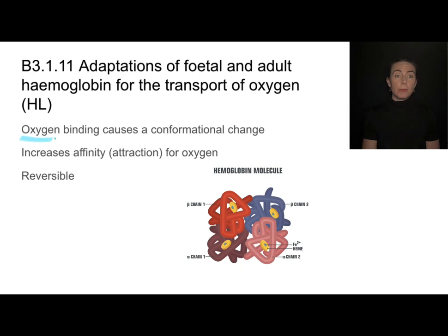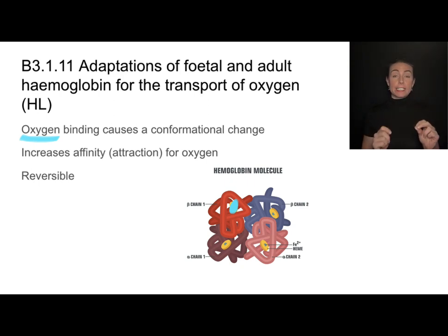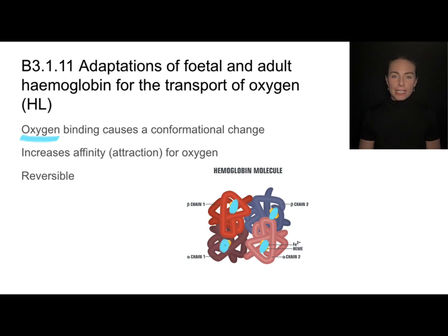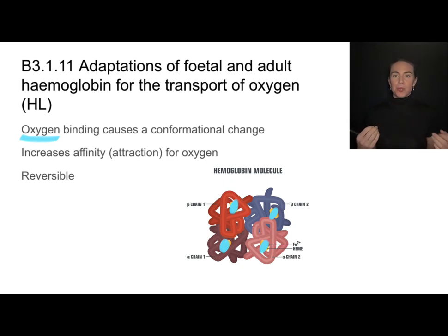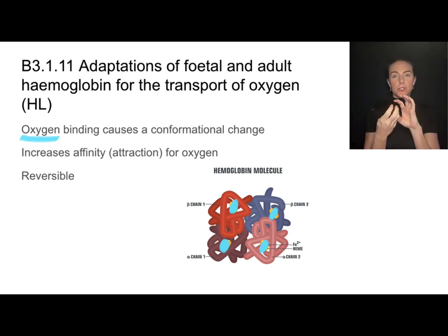When an oxygen molecule binds to one of these heme groups, it causes a conformational change — a change in the shape of the hemoglobin molecule. That increases its affinity, or attraction, to oxygen. So every time an oxygen binds, hemoglobin becomes more and more attracted to oxygen. This binding is reversible, so oxygen doesn't permanently bind to hemoglobin; it can be removed.